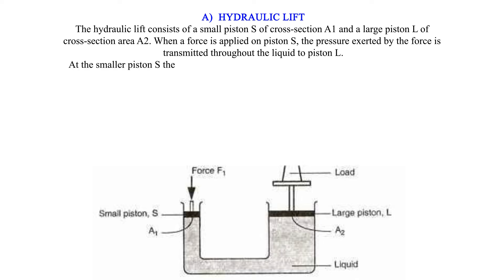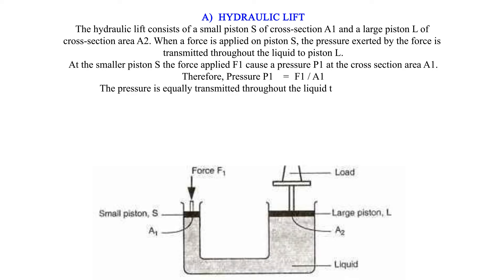At the smaller piston S the force applied F1 causes a pressure P1 at the cross-section area A1. Therefore, pressure P1 equals F1 over A1. The pressure is equally transmitted throughout the liquid to the larger piston. Thus at small piston pressure is equal to the pressure at the large piston.